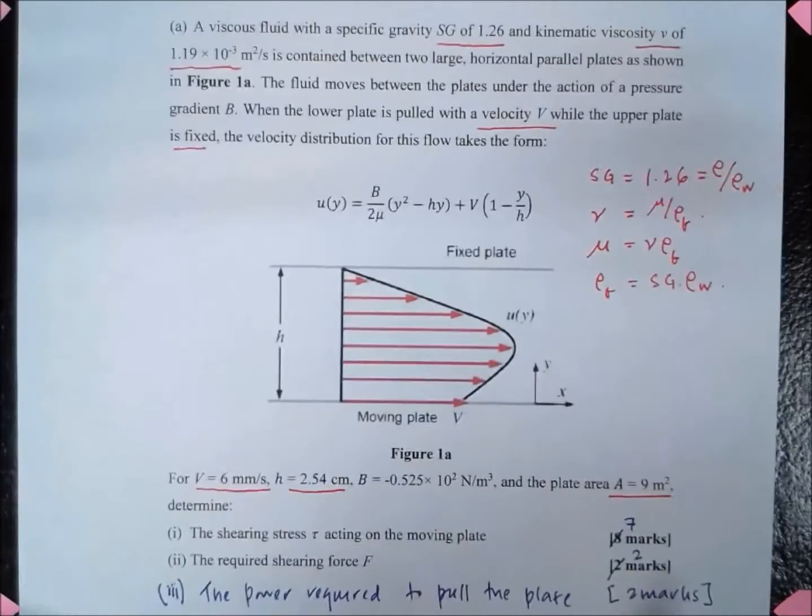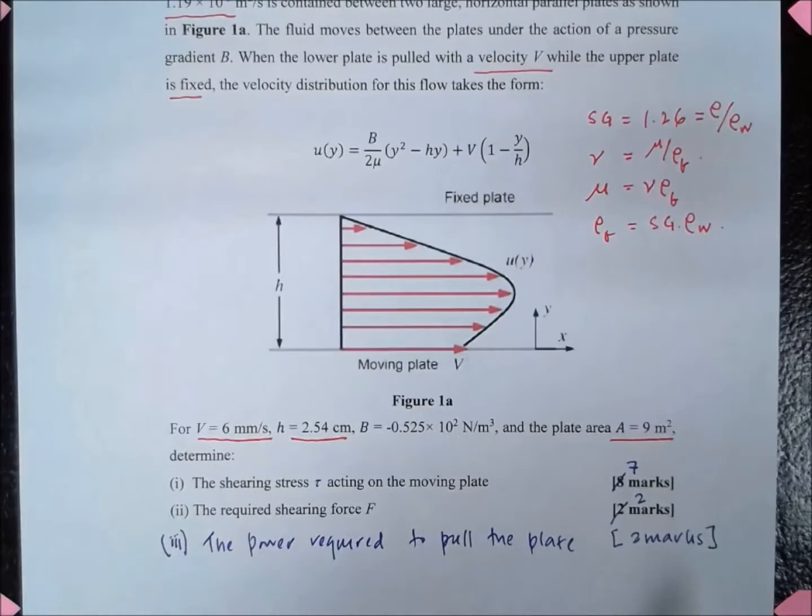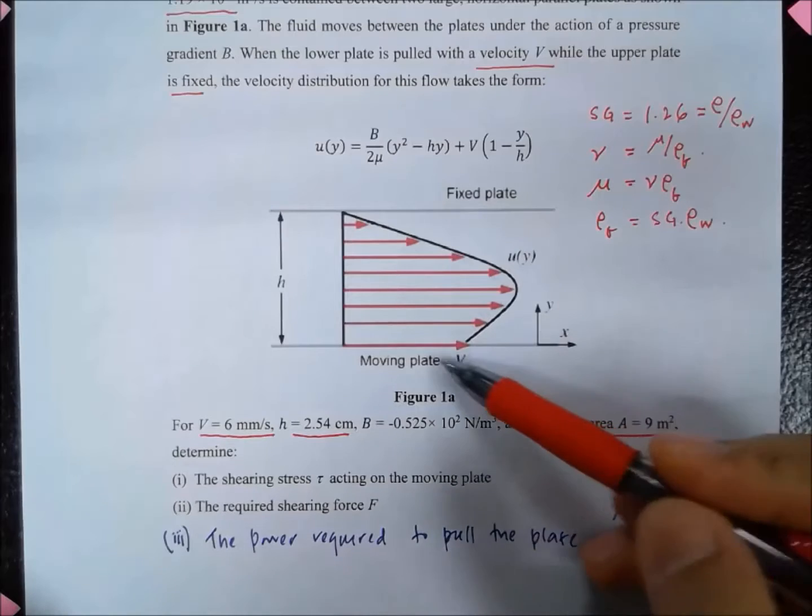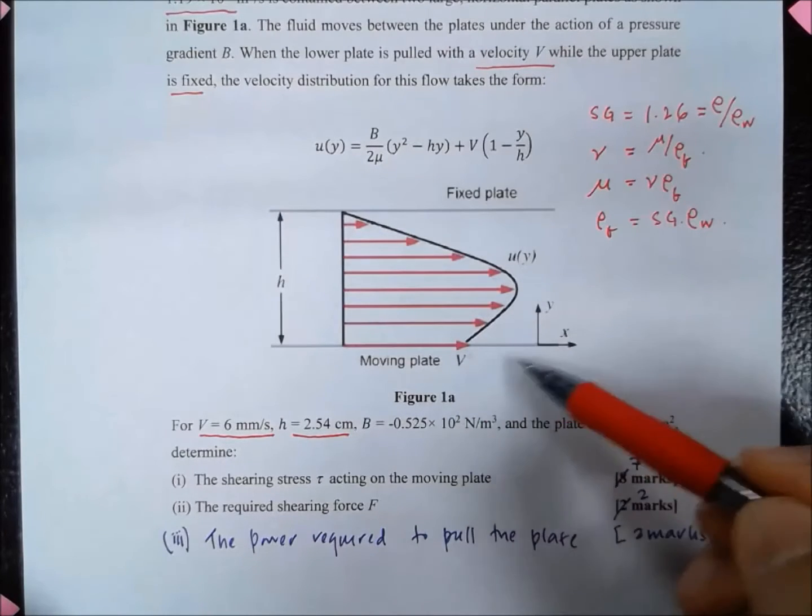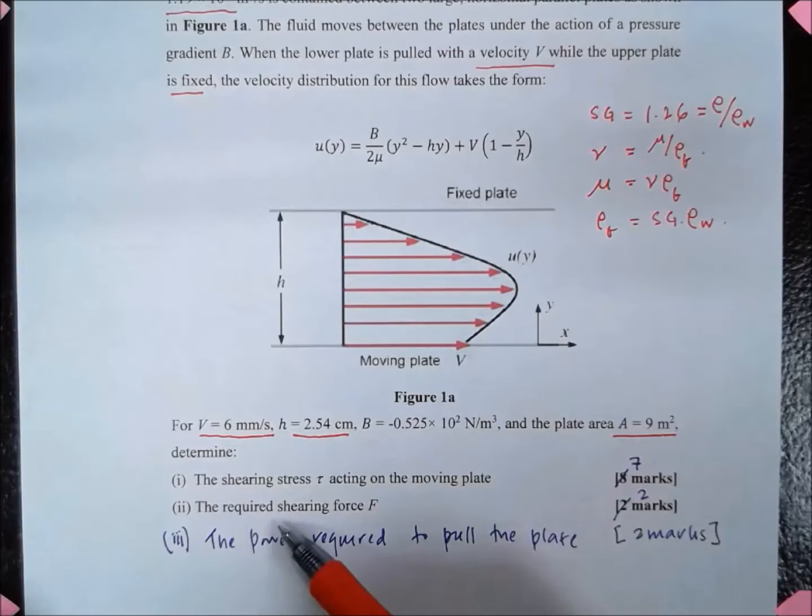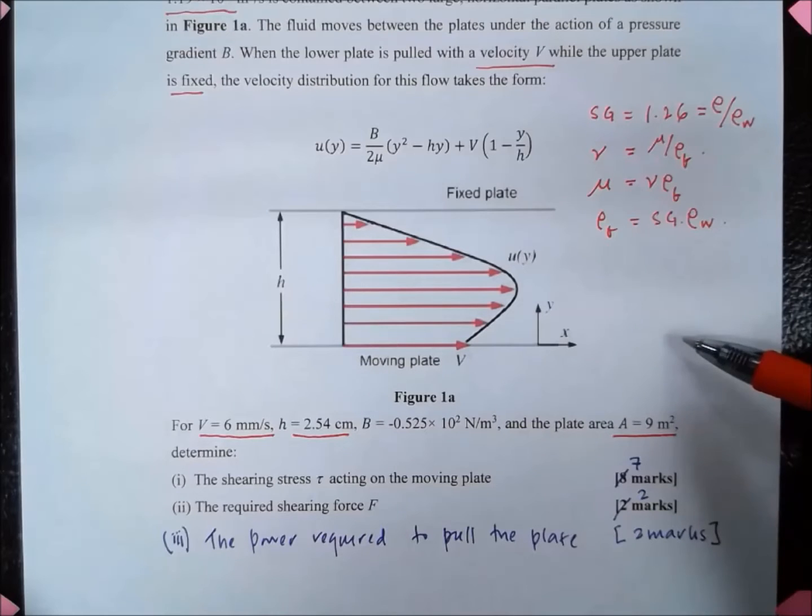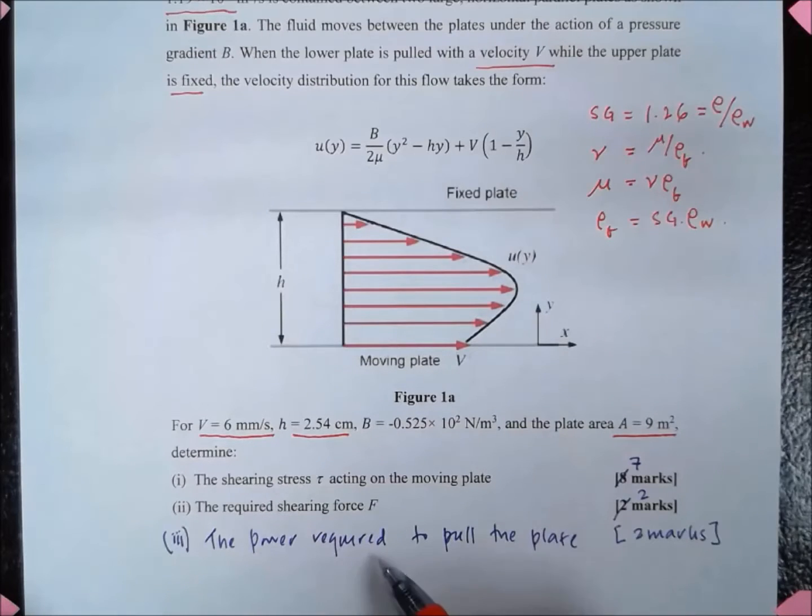So there are three things that we are asked to determine here. The first one is the shearing stress tau acting on the moving plate. Secondly, the required shearing force in order to pull the plate. And thirdly, the power required to pull the plate.